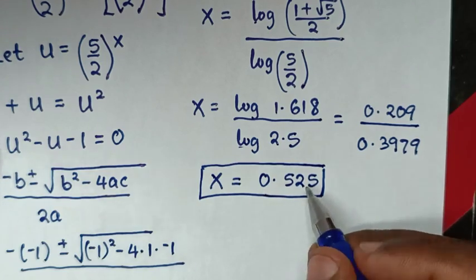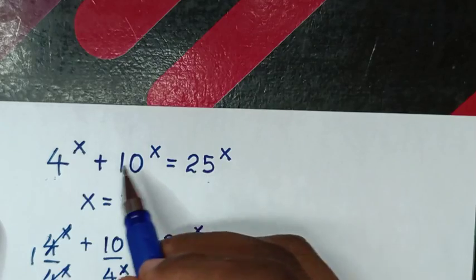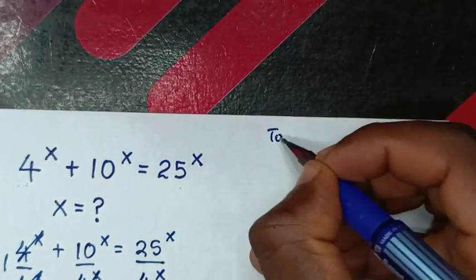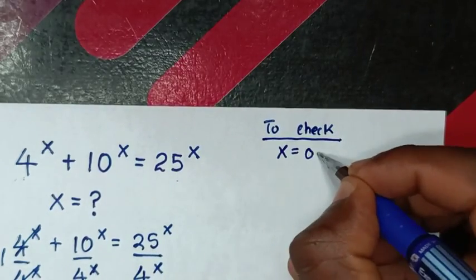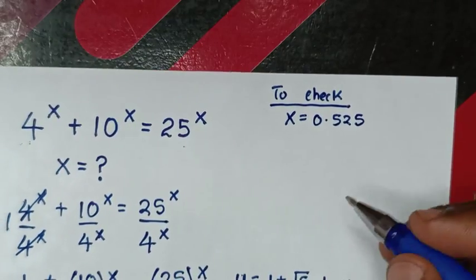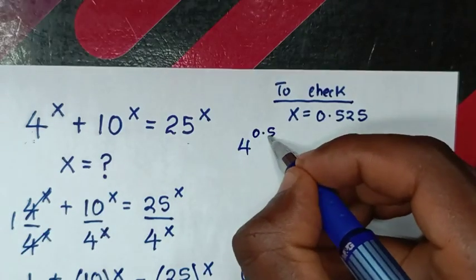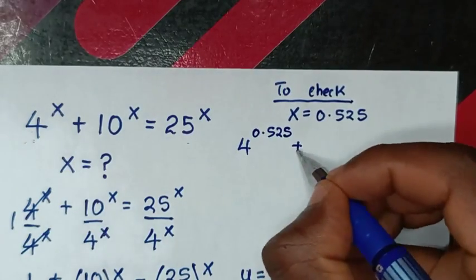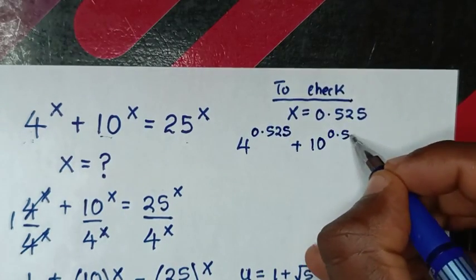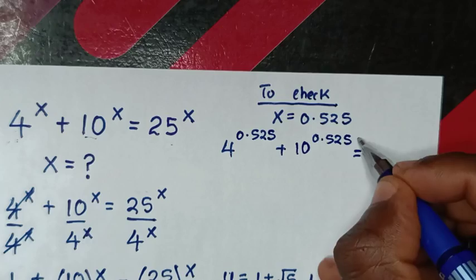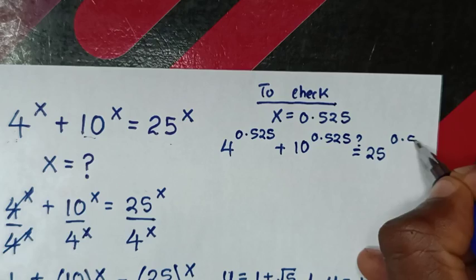Now, to check if x equals 0.525 is correct, we substitute this value back into the original equation: 4^0.525 plus 10^0.525 should equal 25^0.525.